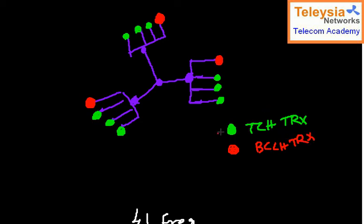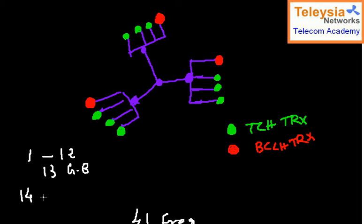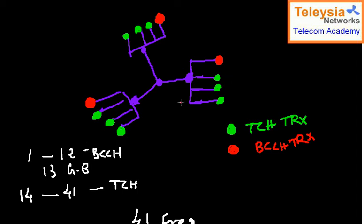Let's do a small frequency plan. We have two bands — frequencies 1 to 12 are for BCCH, frequency 13 is skipped as the guard band, and frequencies 14 to 41 are for TCH. So let's plan the BCCH frequency for this cell site.